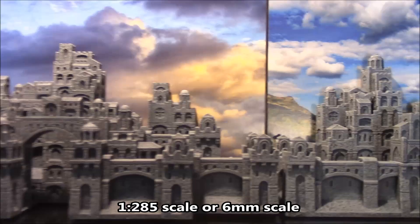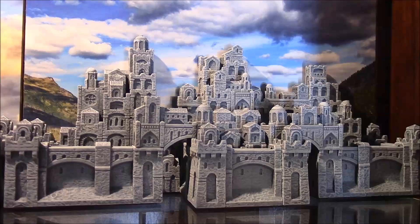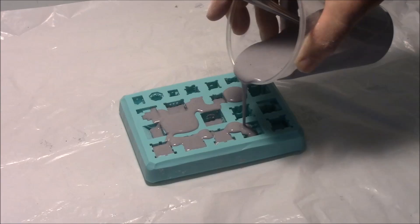The scale of these buildings is 1-285, also known as 6mm scale. These are made from individual building blocks which you can rearrange to create a large variety of ancient cities.